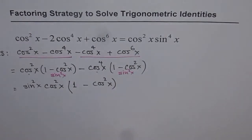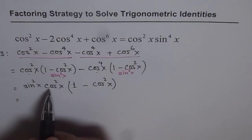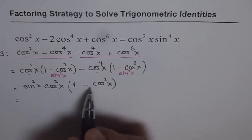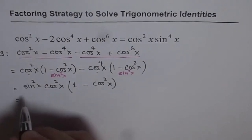I've combined two steps here—I'll elaborate on that later. So we have cos²x times sin²x times (1 - cos²x). And what is 1 - cos²x? Again, sin²x.